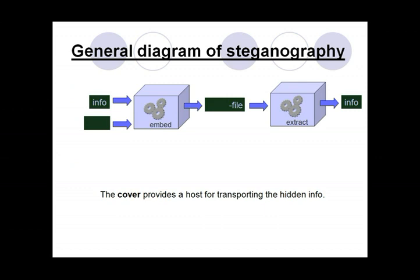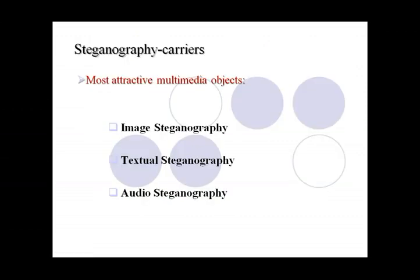Now let us see the general diagram of steganography. First, the information is embedded into a file. The embedded word refers to the password or algorithms used within a file, and at the receiver's side it is extracted. Next, steganography carriers refers to the types of steganography.